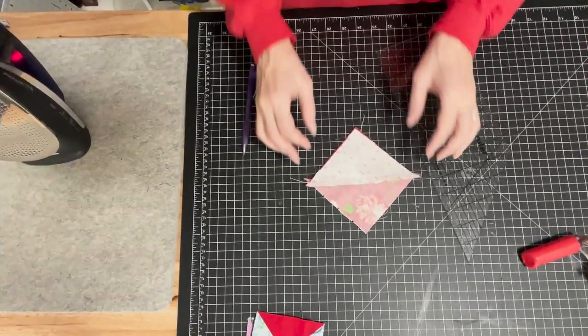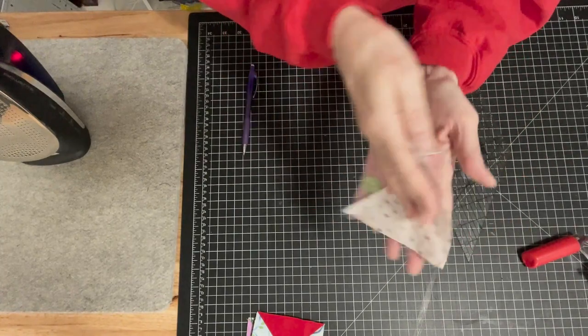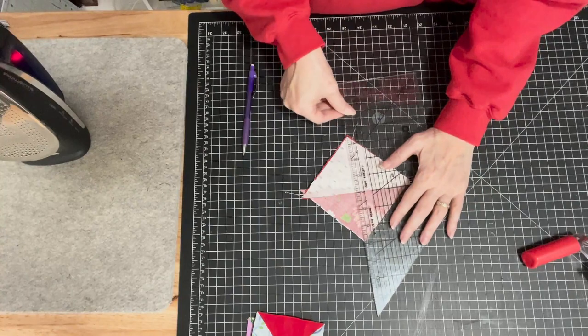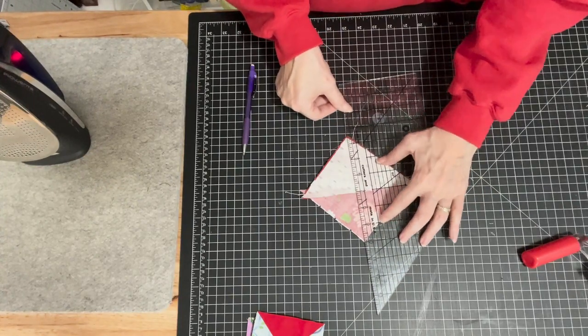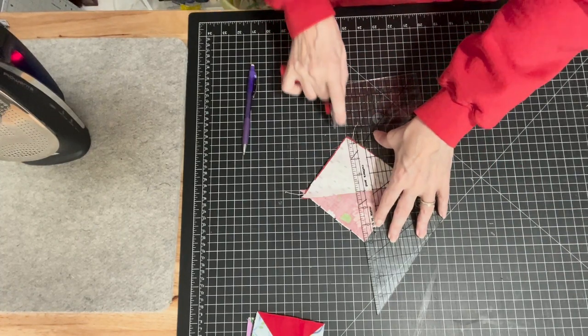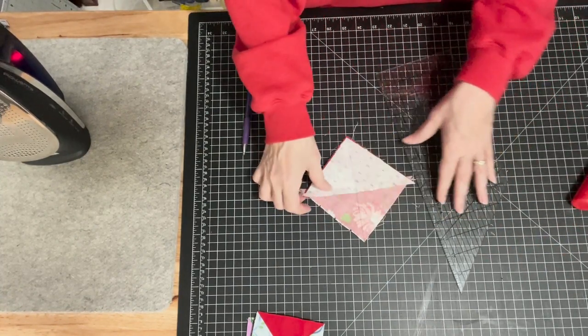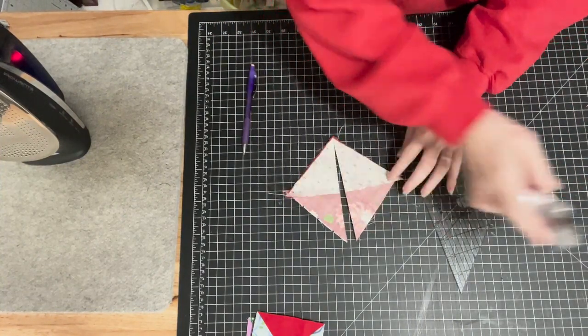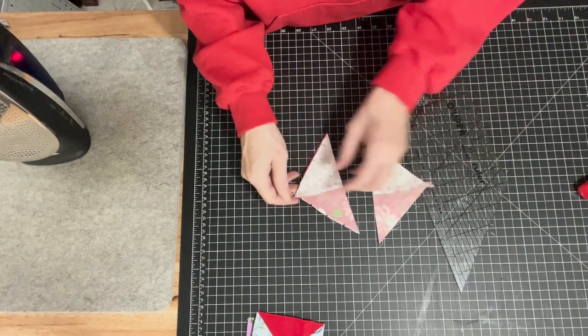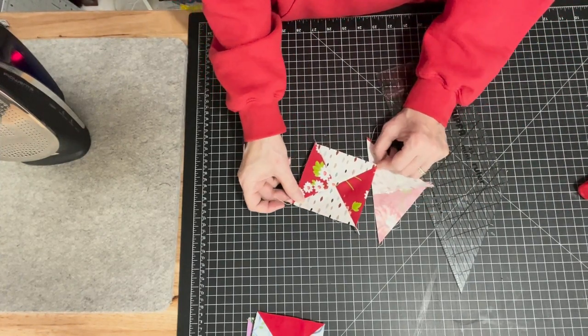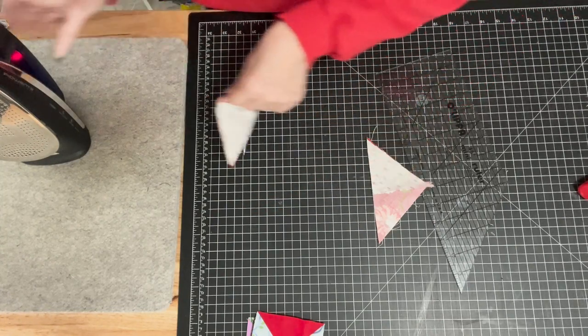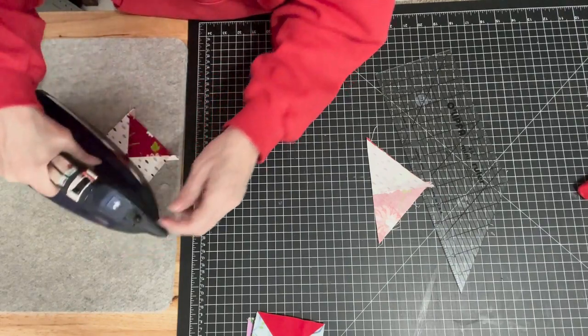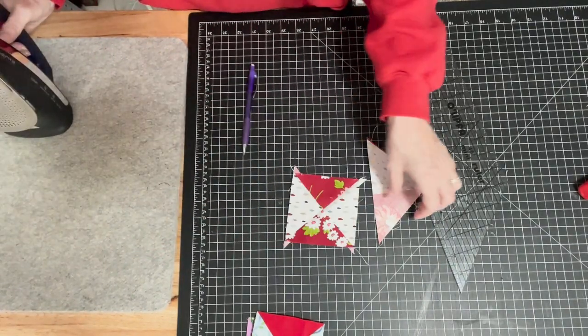Now I've sewn on either side of that line, and I'm going to cut again right on that line that I've drawn. When I open that up, I end up with the cutest little hourglass block. I'm going to iron that open.